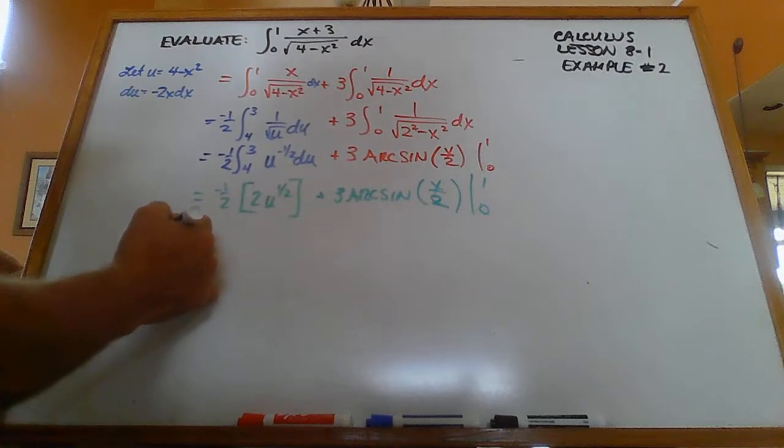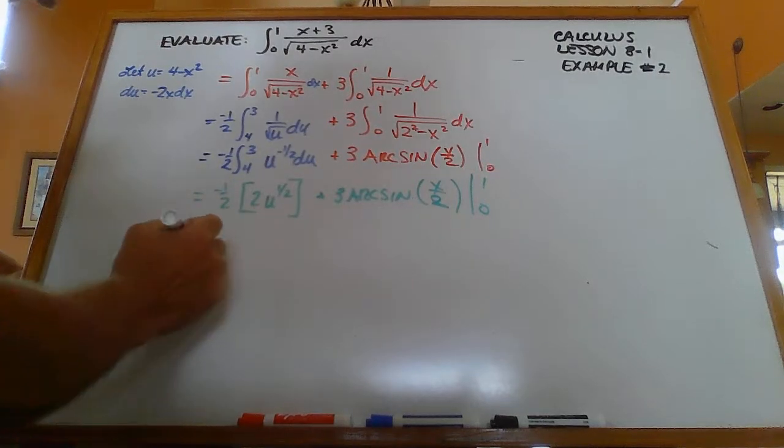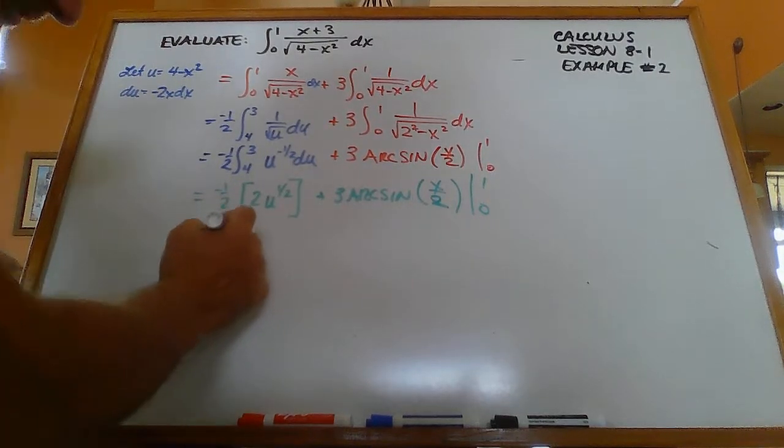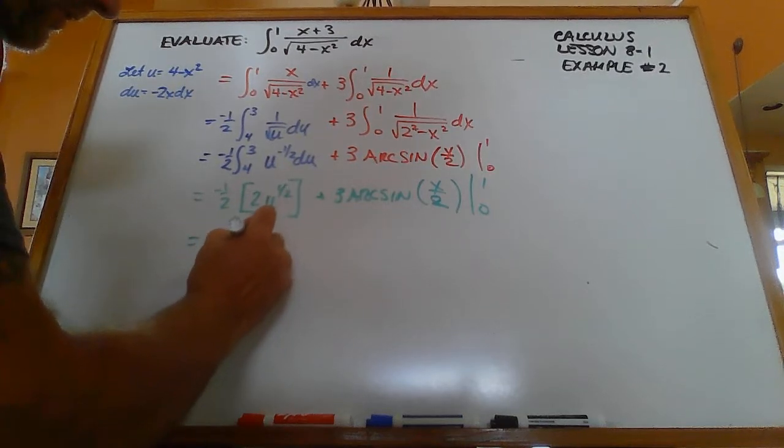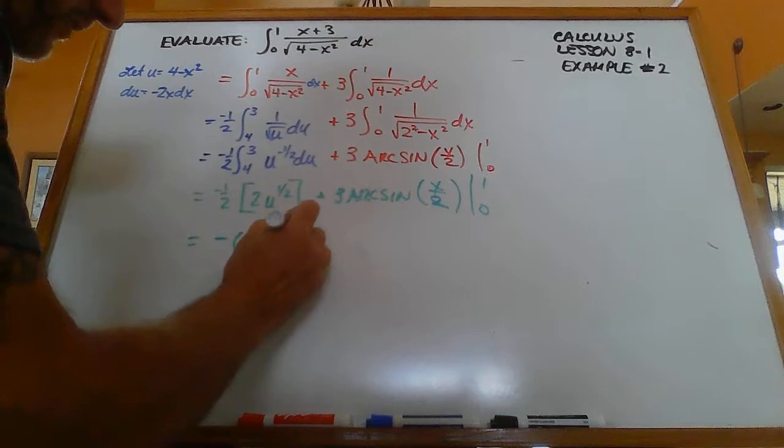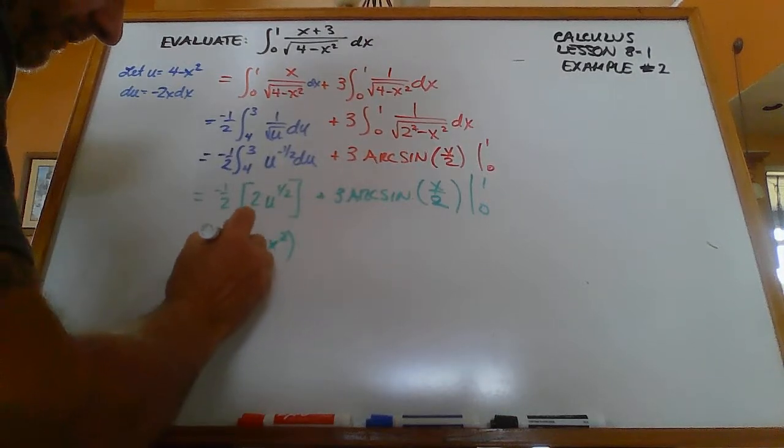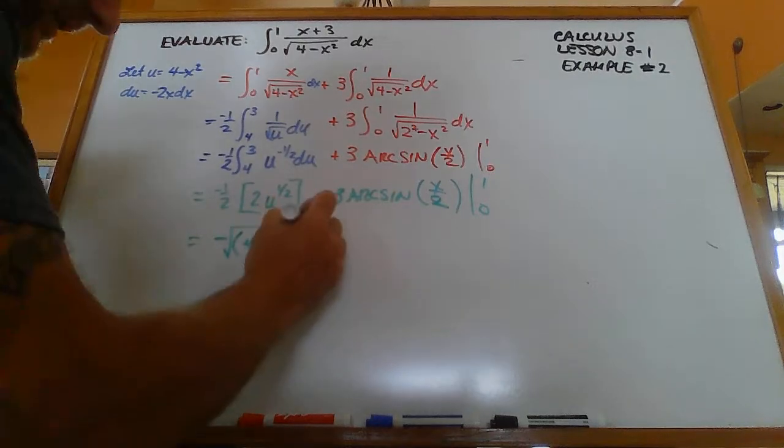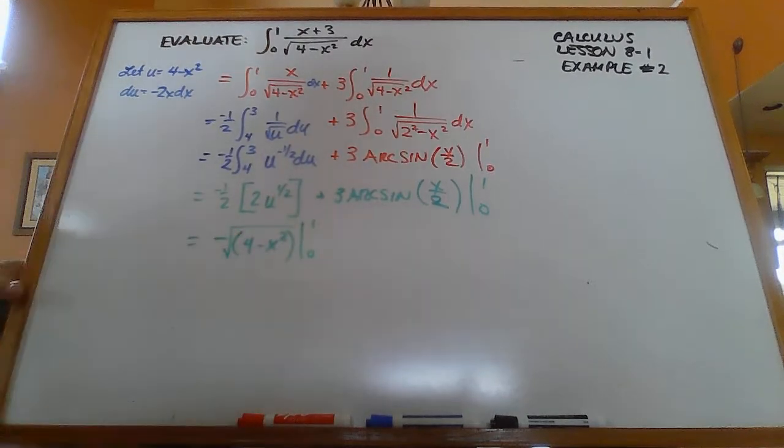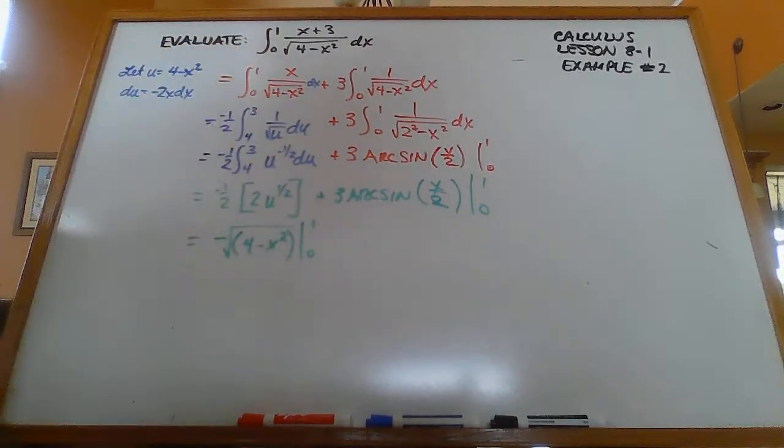So this negative 1 half is going to cancel out the 2 there. And I'm going to get negative 4 minus x squared to the 1 half power, which is the square root. And that's evaluated from 0 to 1, because I put the x's back in.